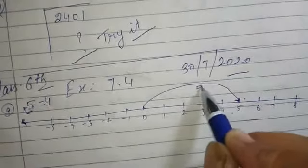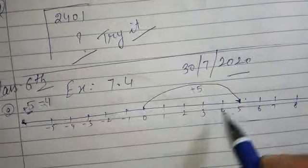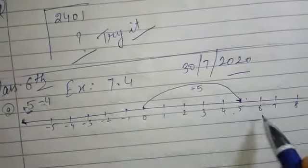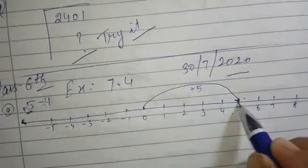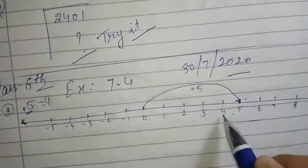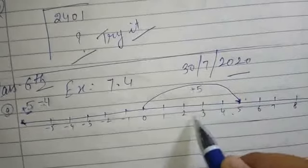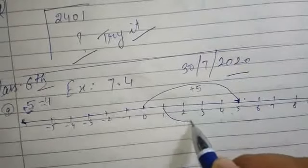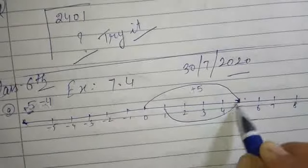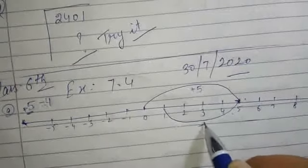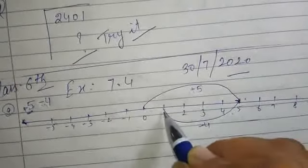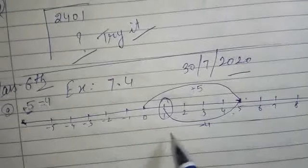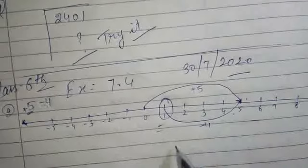अब हमने 5 steps move किए. अब 4 step minus है, तो minus के लिए 4 steps हम इधर आएंगे — 1, 2, 3, 4. तो 4th step पर हम कहाँ आ पहुँचे? Minus 4 पर नहीं, 1 पर. So our answer is 1.